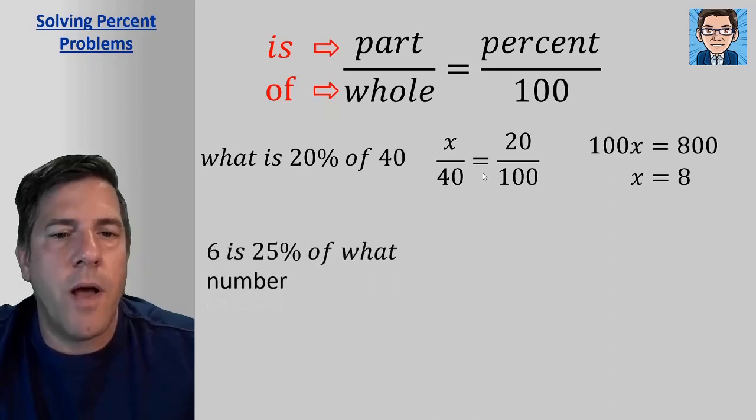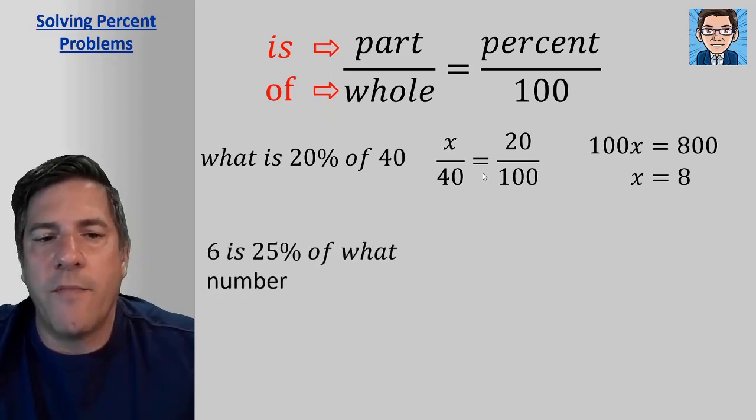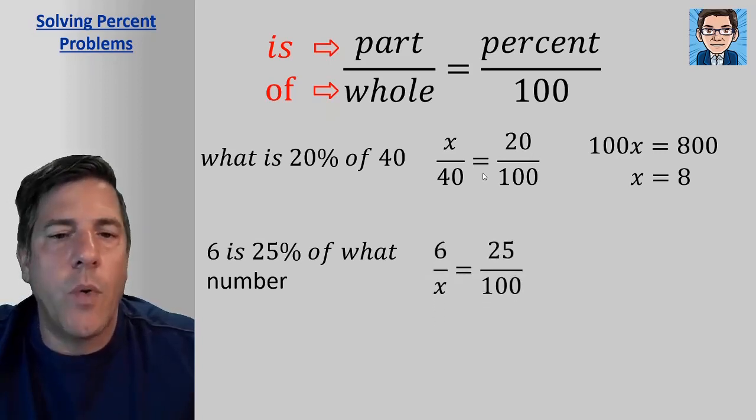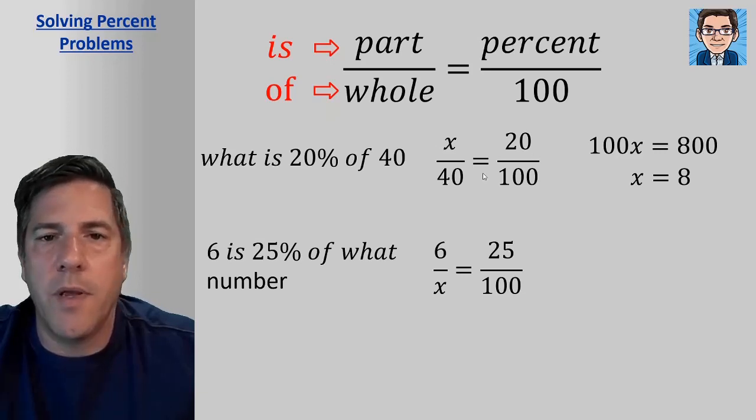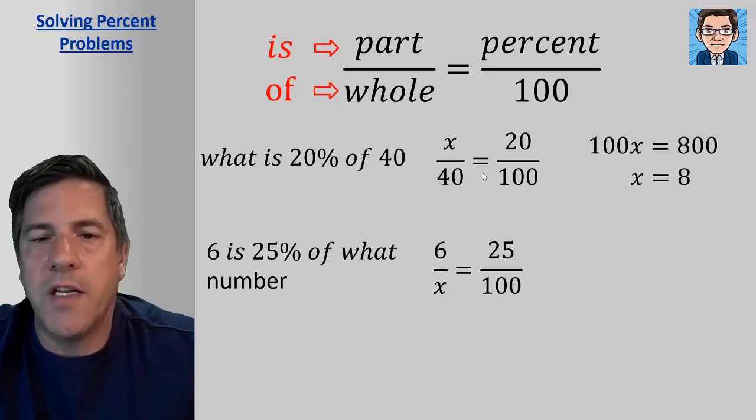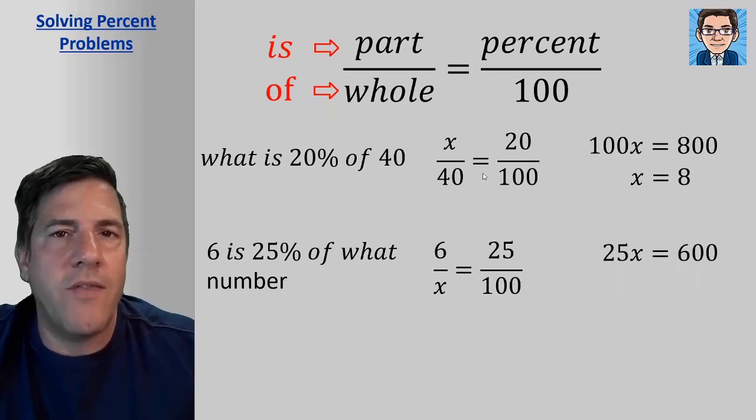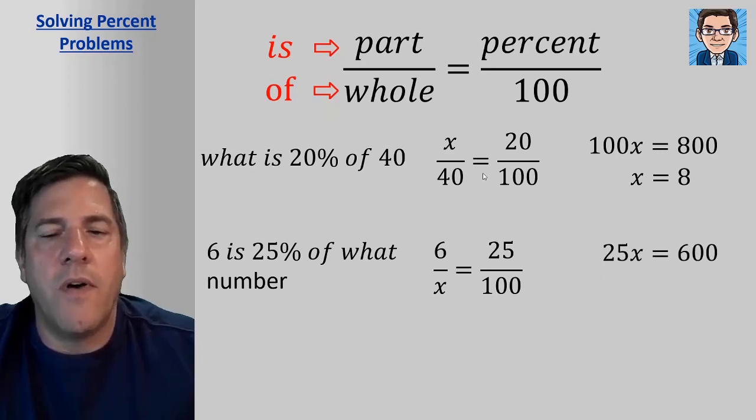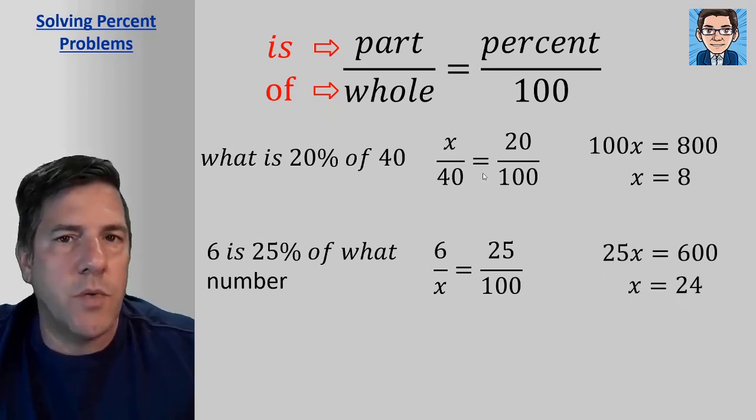All right, another version of the problem. 6 is 25% of what number? So we would set up 6. We know what the part is. Here we don't know what the whole is. So the variable here is going to be in the denominator for the whole because we don't know of what number. And we do know the percentage is 25. And again, we cross multiply. 25x equals 600. Divide by 25, and we get x equals 24.